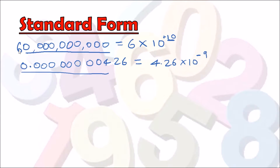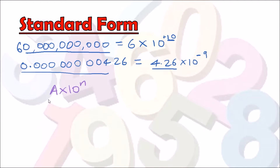The positive power applies to large numbers and the negative power to small numbers. The value part is always written as a number like 4.26 or 6-point-whatever. In general, standard form always takes the form a times 10 to the power of n, where n is the number of places the decimal point has moved.